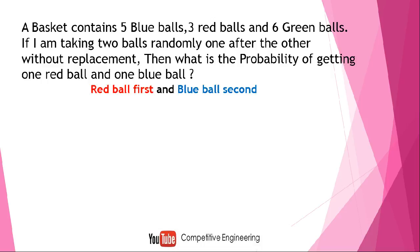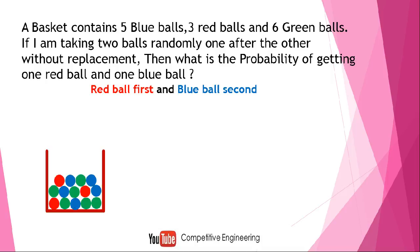If I am taking 2 balls randomly one after the other without replacement, what is the probability of getting 1 red ball and 1 blue ball? There are 2 possibilities. The first possibility: the first ball is red AND the second ball is blue. So I take the red ball first, then I take the blue ball second.